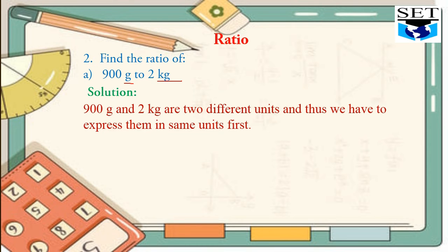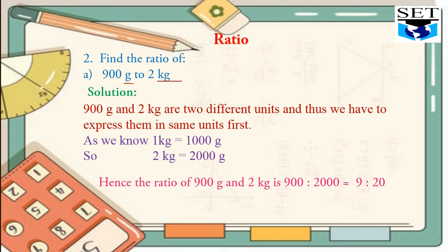900 g and 2 kg are two different units and thus we have to express them in same units first. As we know, 1 kg is equal to 1000 g, so 2 kg is equal to 2000 g. We will write 2000 g instead of 2 kg in order to get the same unit, because in ratio we talk about like units or same units. Hence the ratio of 900 g and 2 kg is 900 to 2000.